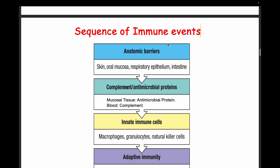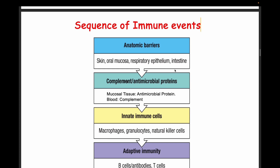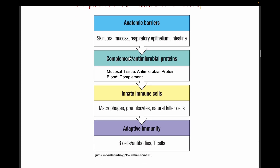The immune system has a sequence of immune events. We have the complement and anti-microbial proteins. The anti-microbial proteins are produced by the mucosa and by the skin, and together with the complement, this forms the complement system.